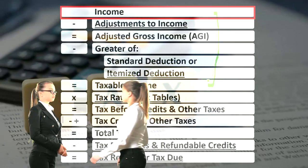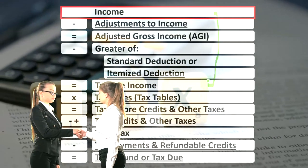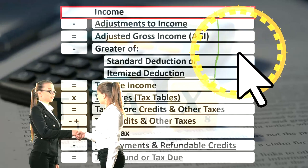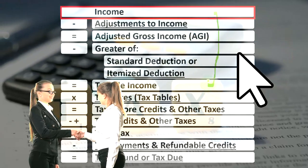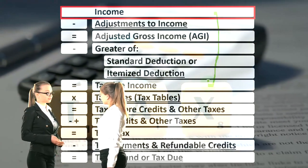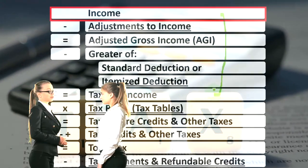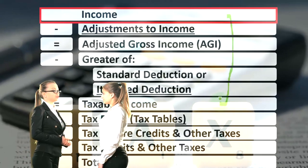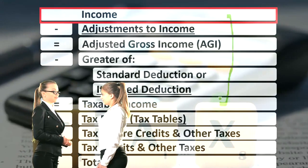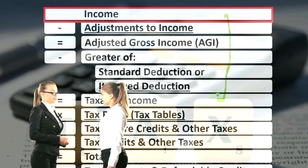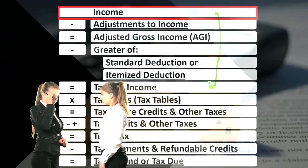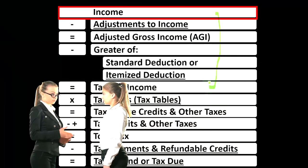Normally an income statement has income minus expenses equals net income. Our goal is to maximize net income, so typically we would like to see income increase and expenses decrease. With taxes, everything is flipped on its head.